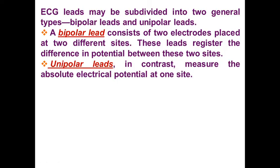After connection, we get the so-called Einthoven's triangle, which I hope you remember from normal physiology classes. ECG leads may be divided into two general types: bipolar leads and unipolar leads. Bipolar leads consist of two electrodes placed at two different sites; these leads record the difference in potential between these two sites.